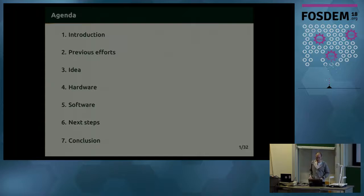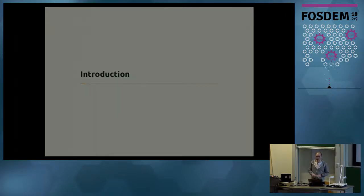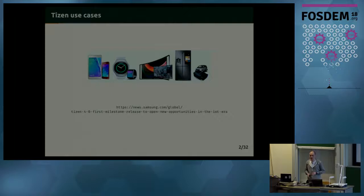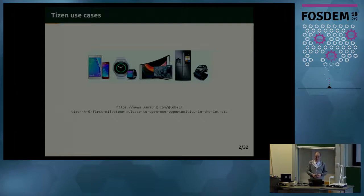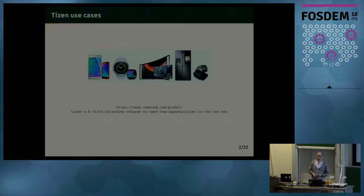So what actually is Tizen? Tizen is a GNU/Linux distribution aimed at embedded devices — mainly mobile phones and wearables, but also TVs and even fridges or IoT devices, with Tizen 4.0 Milestone 1 in May 2017. Tizen as a platform is developed by various R&D centers all over the world: in India, South Korea, USA, and Poland as well.